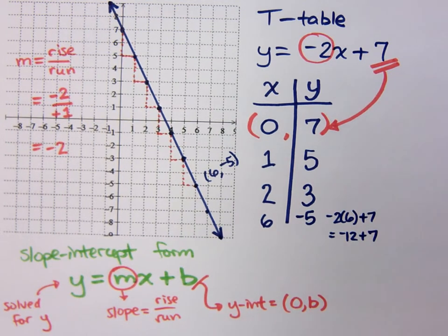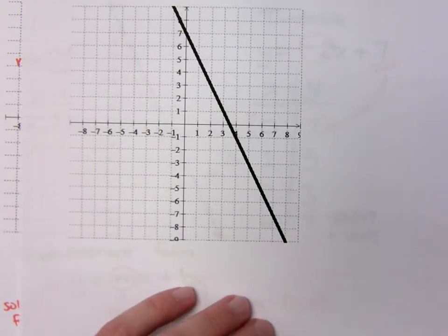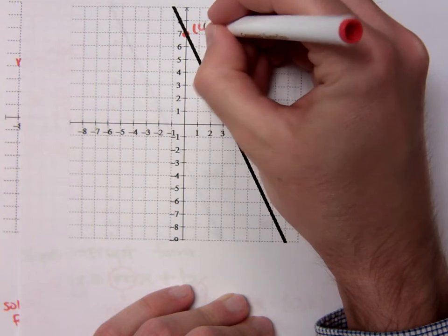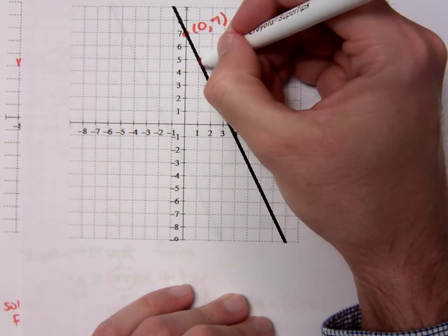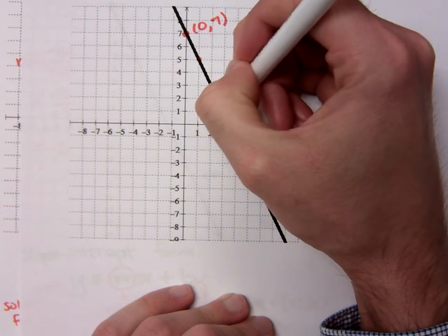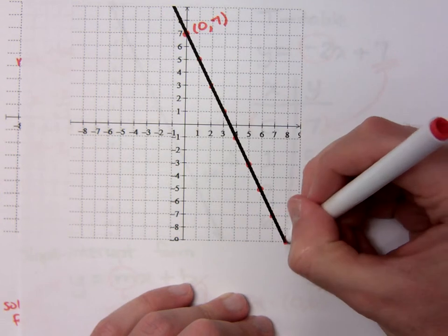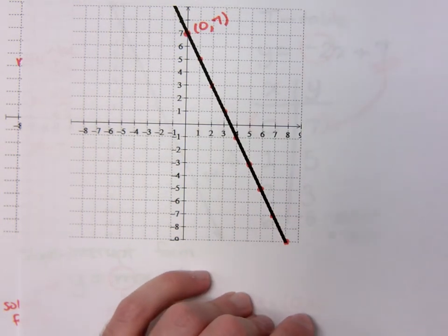And so you see with the computer answer, here is my y-intercept of 0, 7. And you've got your slope of down 2 over 1, down 2 over 1, and so on. All these nice, easy-to-identify points. Okay? Any questions about that guy?